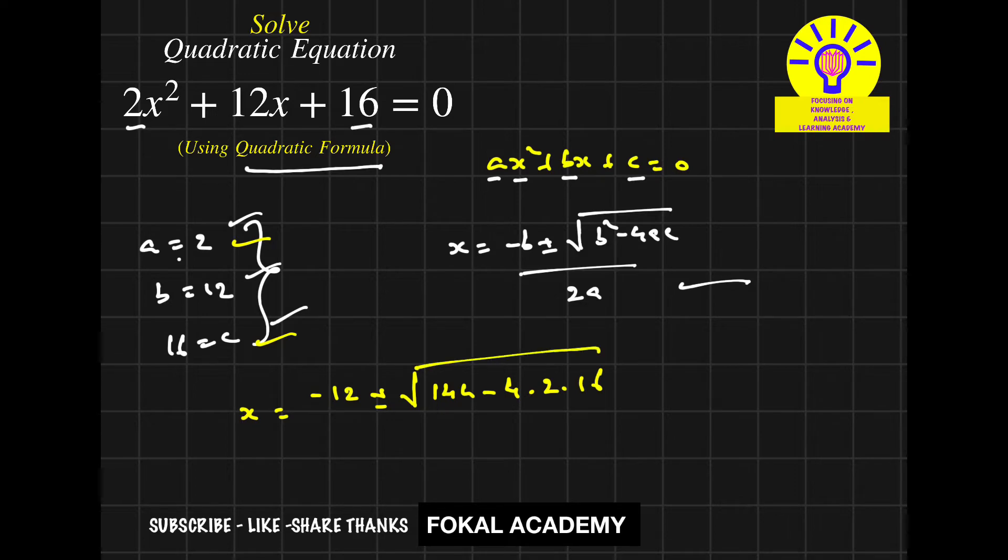This equals (-12 ± √(144 - 128))/4. Since 4·2·16 = 128, we have (-12 ± √16)/4.